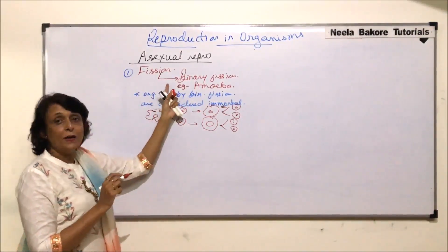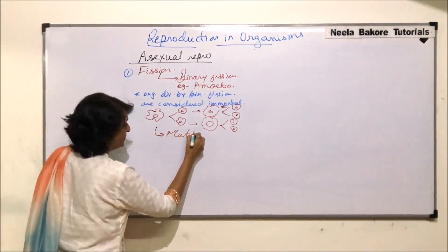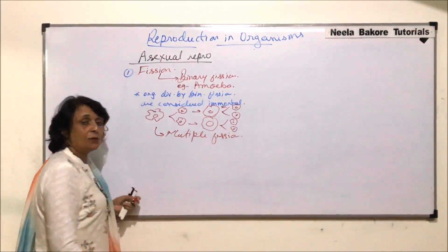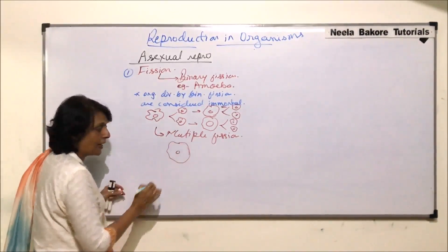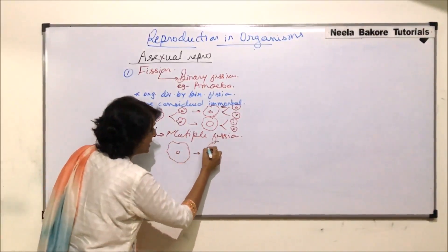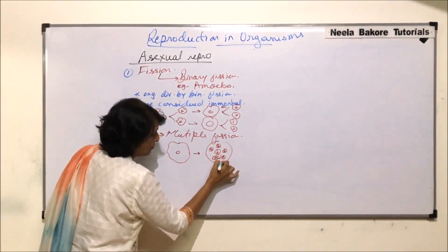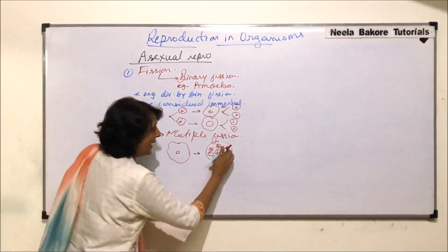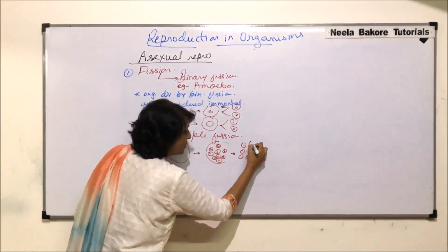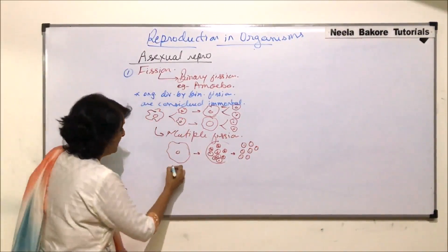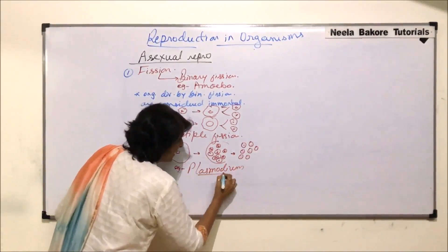Binary fission is where one parent cell divides to produce two daughter cells. The second type is multiple fission, where one parent cell divides to produce many daughter cells. First, nuclear division takes place — the nuclei divide, each nucleus gets surrounded by cytoplasm and a membrane — then the parent cell ruptures releasing many daughter cells. The example here is plasmodium, the malarial parasite.